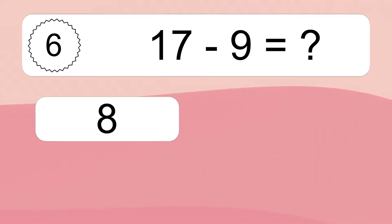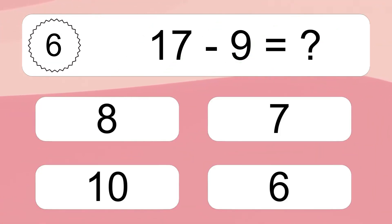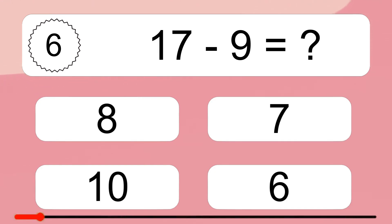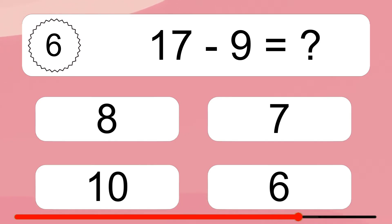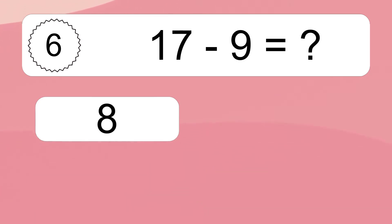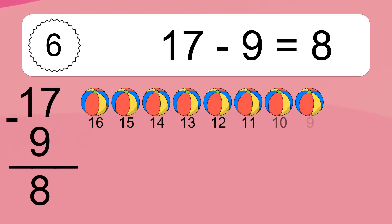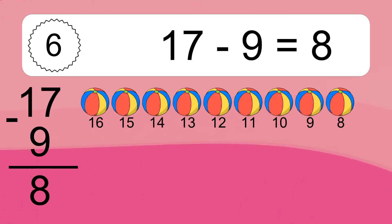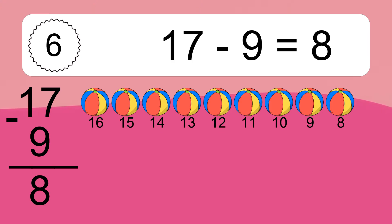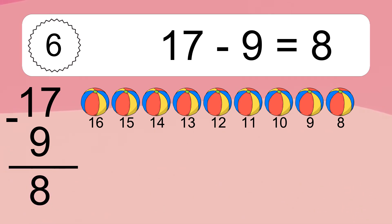17 minus 9 equals what? 17 minus 9 equals 8. Let's count it. 16, 15, 14, 13, 12, 11, 10, 9, 8.